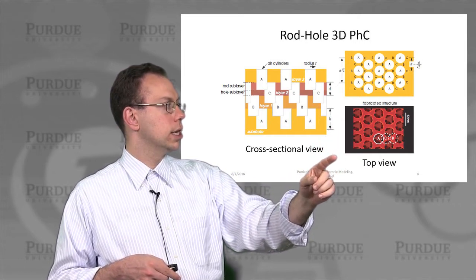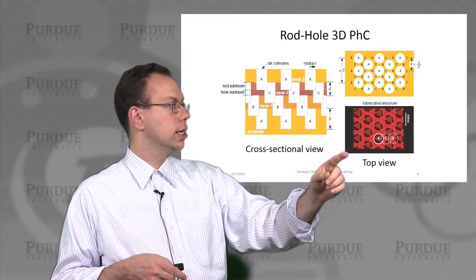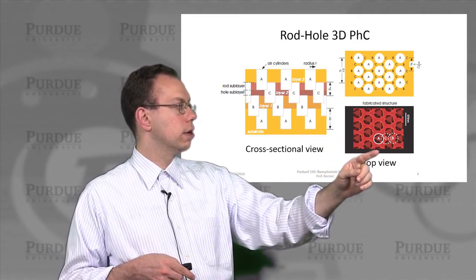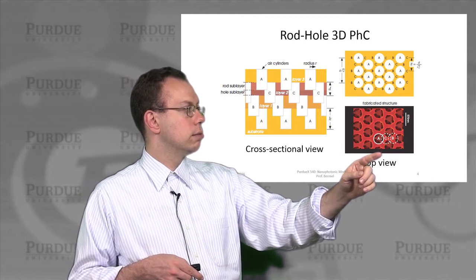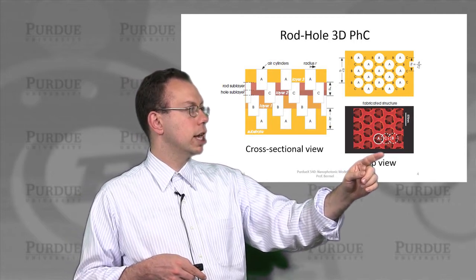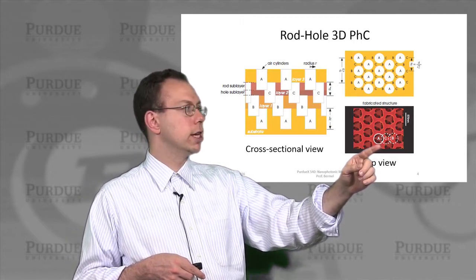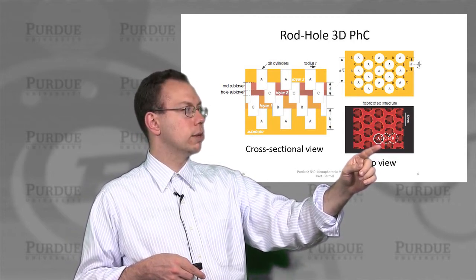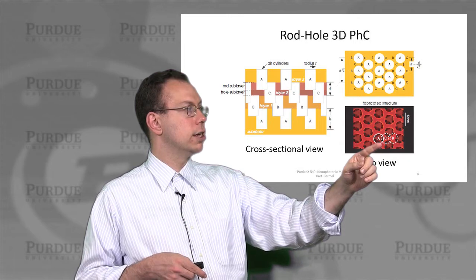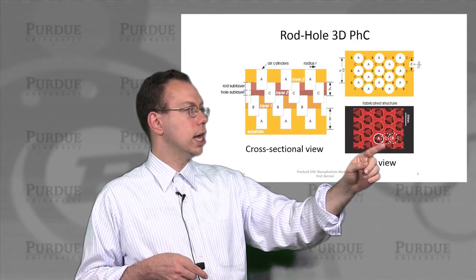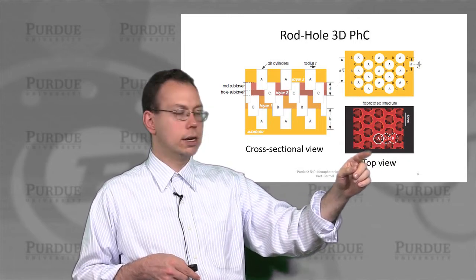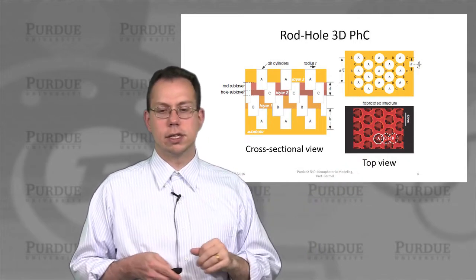You can also see a picture of a fabricated structure looking from above in an electron micrograph, where you can actually see that A, B, and C are collinear with each other.